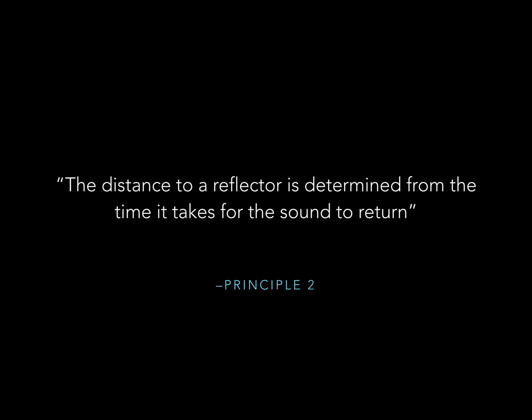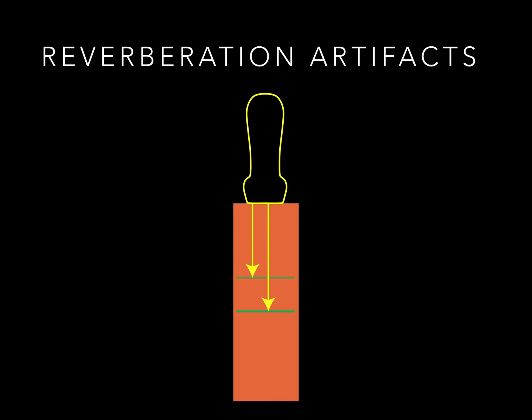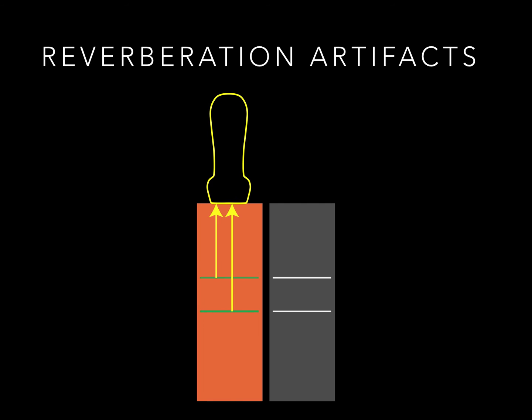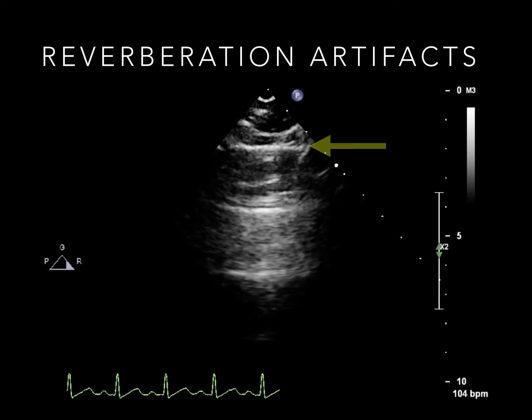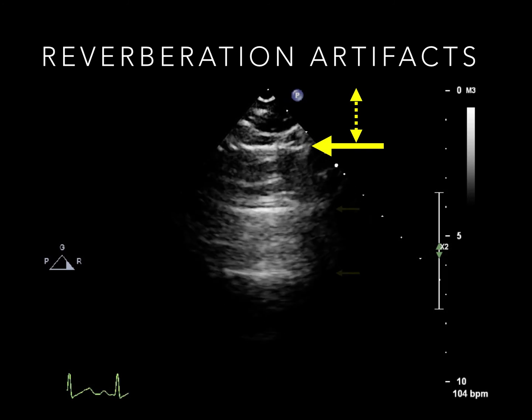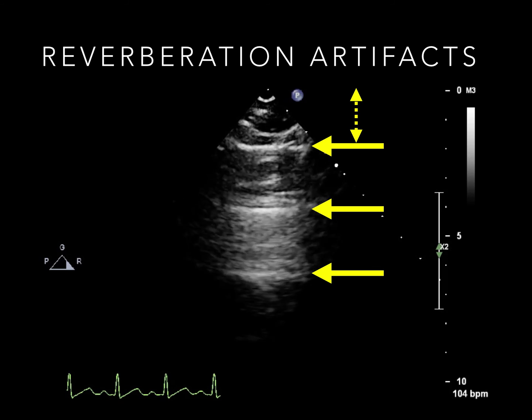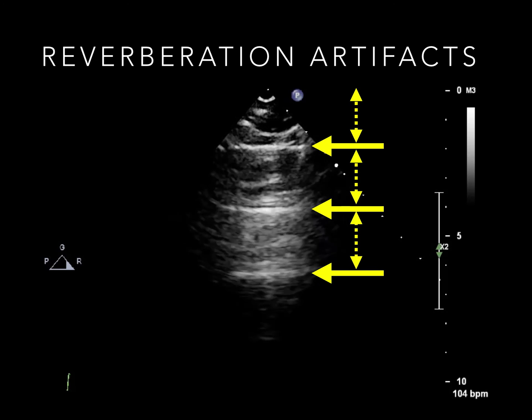Principle 2: the distance to a reflector is calculated from the time it takes for the sound to return, but speed varies depending on the tissue, and the beam may undergo multiple reflections before returning. This can lead to reverberation artefacts. Some ultrasound can ricochet back and forth between two strong reflectors, taking even longer to get back to the machine, which assumes there must be another, deeper structure causing it — more reflections, more imaginary objects. This is a lung ultrasound showing the highly reflective pleura about 2 cm from the skin. Ultrasound reverberating between the probe and the pleura produces multiple extra lines called A-lines, shown here also at intervals of about 2 cm.